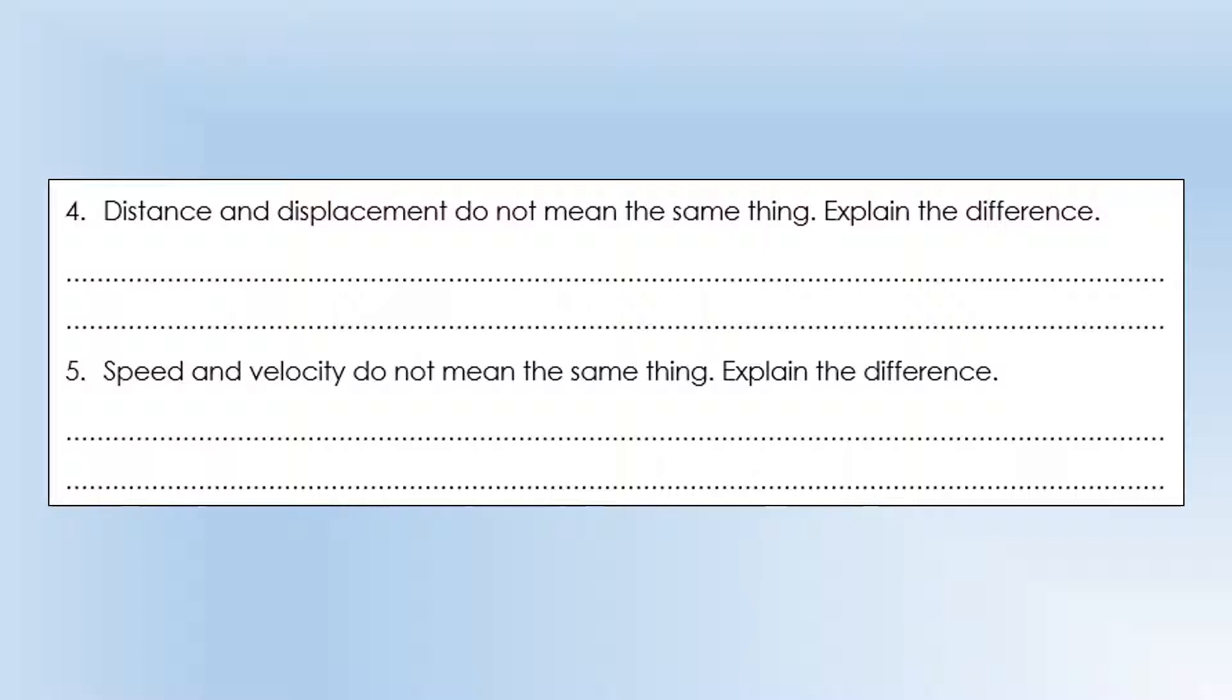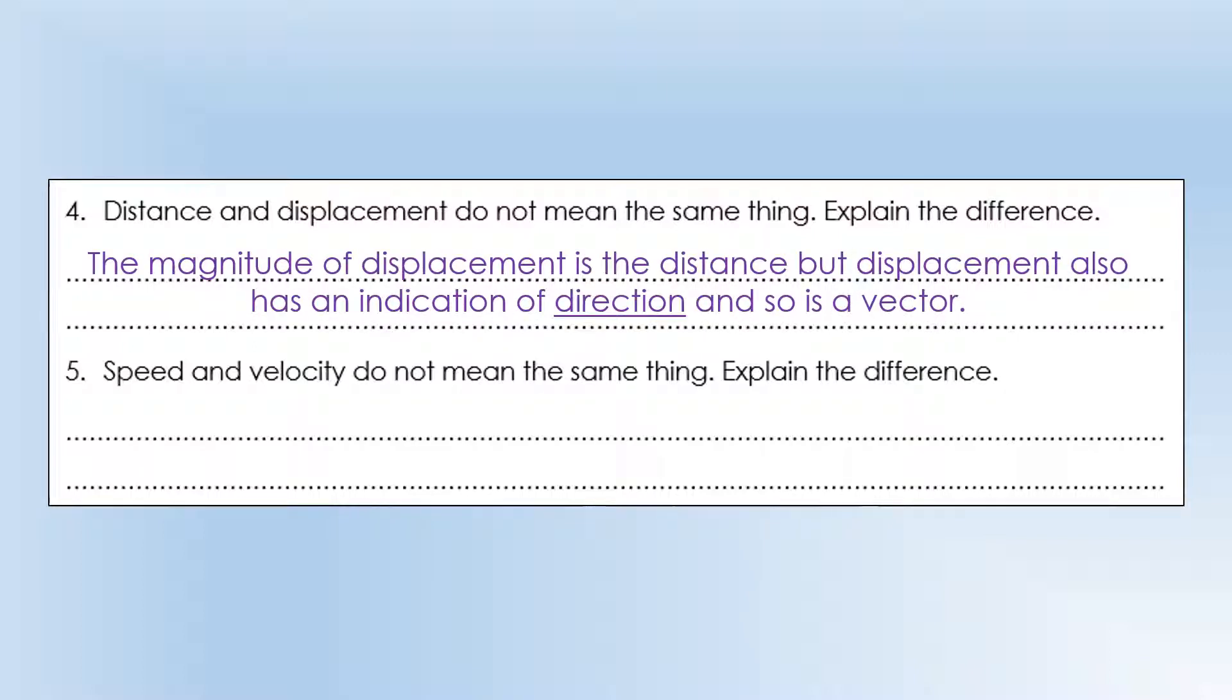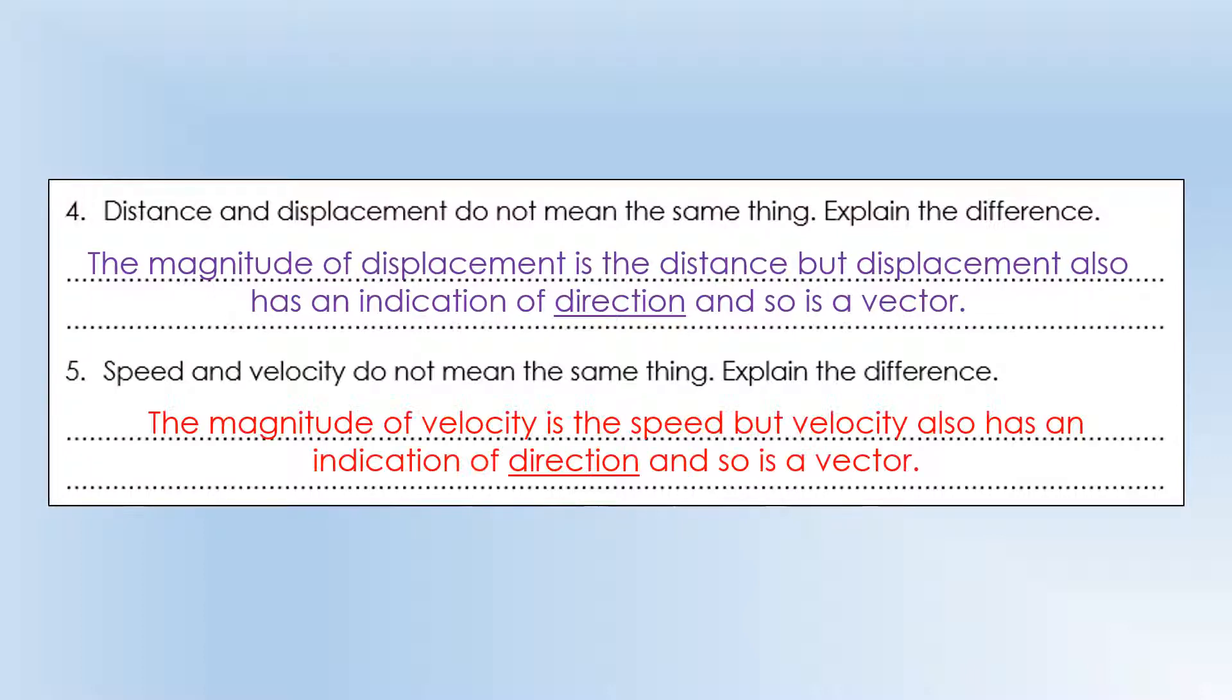Distance and displacement do not mean the same thing. Explain the difference. The magnitude of displacement is the distance, but displacement also has an indication of direction, so displacement is a vector and distance is a scalar. We can do the same thing with speed and velocity. The magnitude of the velocity is speed, but velocity also has a direction. So velocity is a vector, but speed is a scalar.